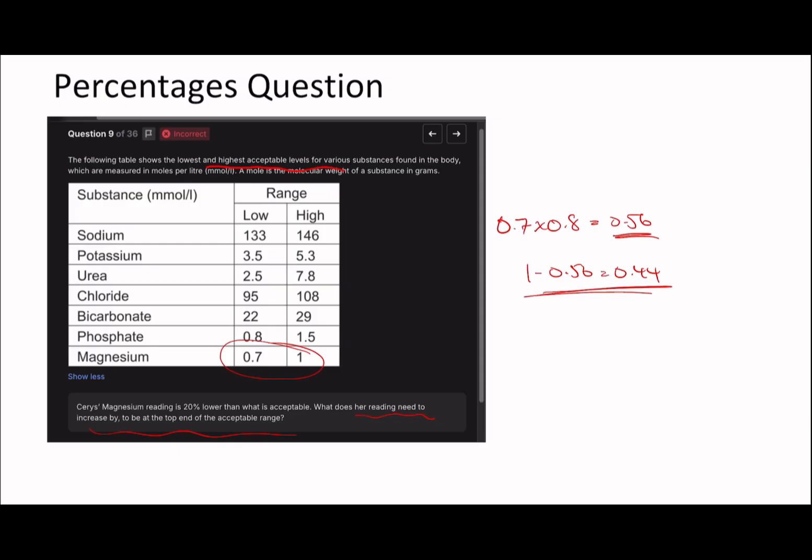What does her reading need to increase by to be at the top end of the acceptable range? The top end for magnesium is 1. So 1 minus 0.56 is 0.44. But let's say we wanted the answer as a percentage. The fast way to do percentage change is final divided by initial minus 1 times 100. So 1 divided by 0.56 minus 1 times 100 gives us 78.6%.